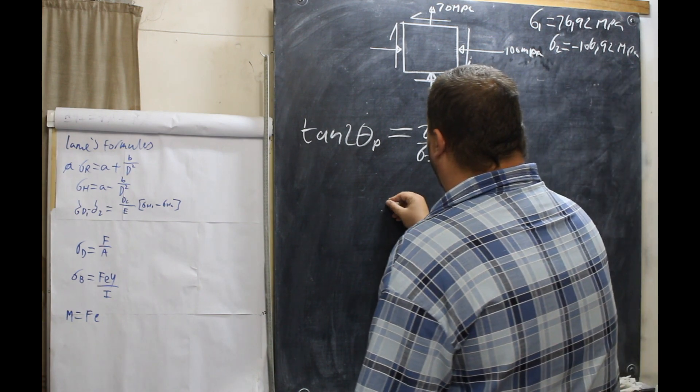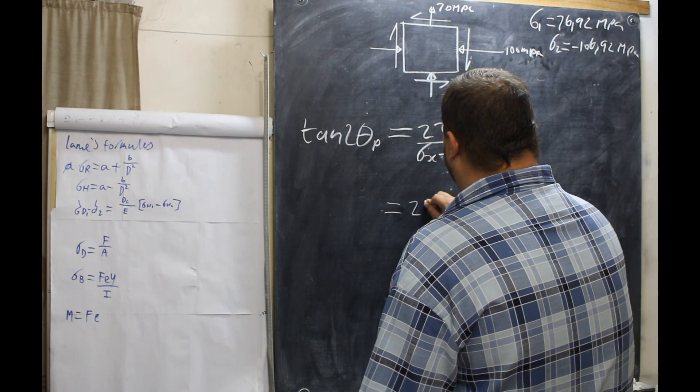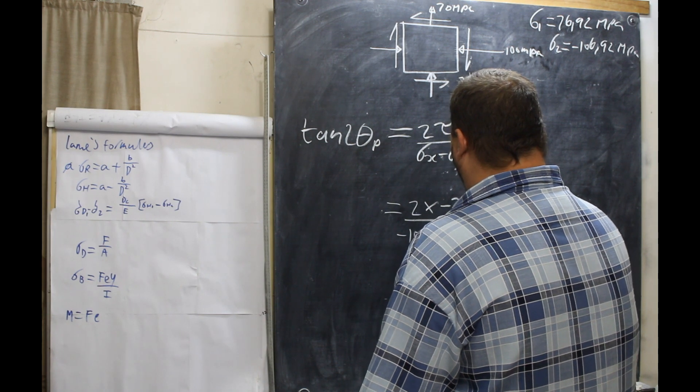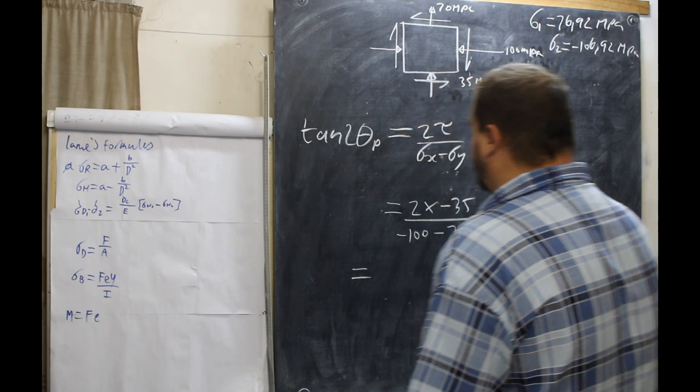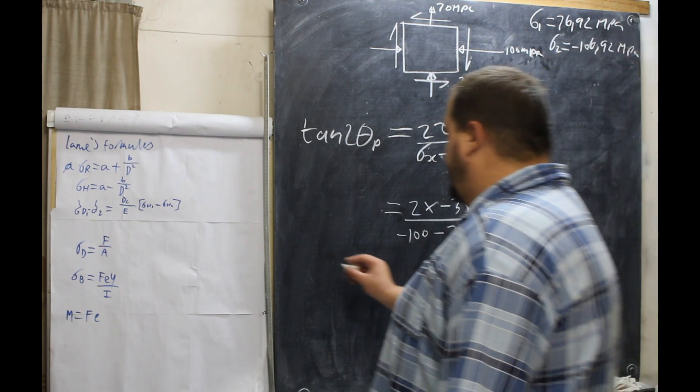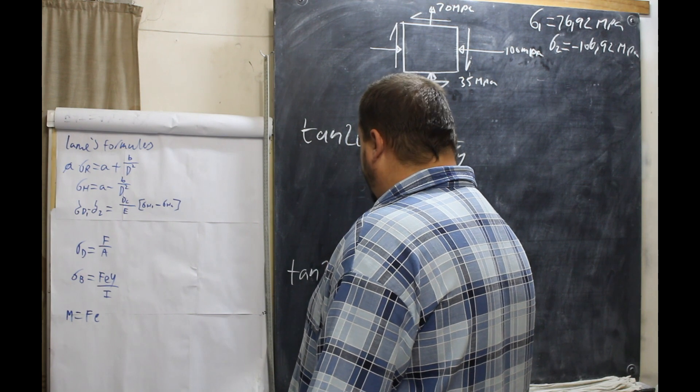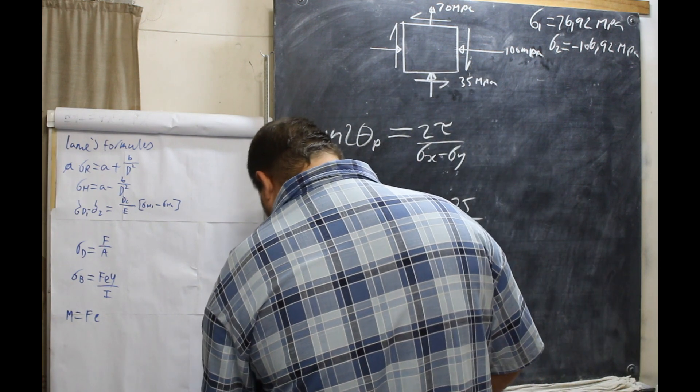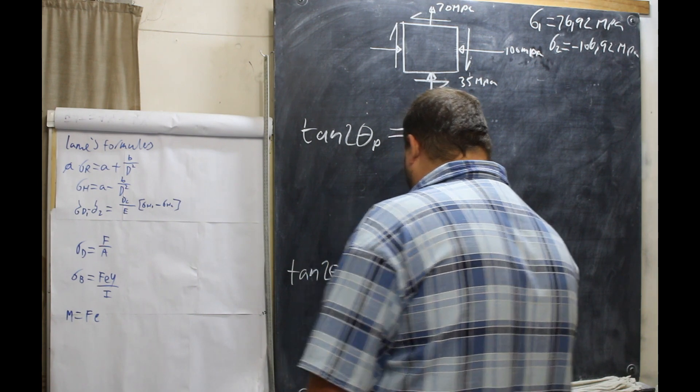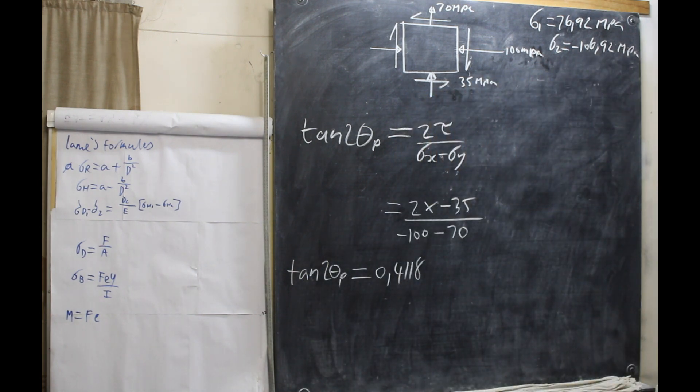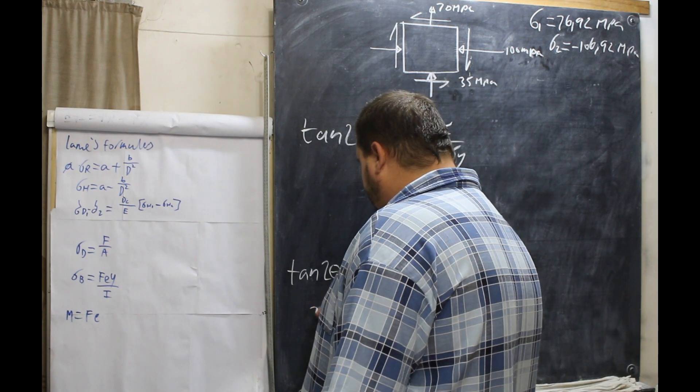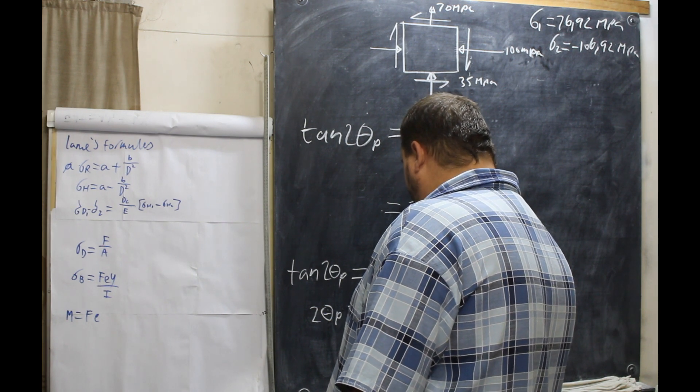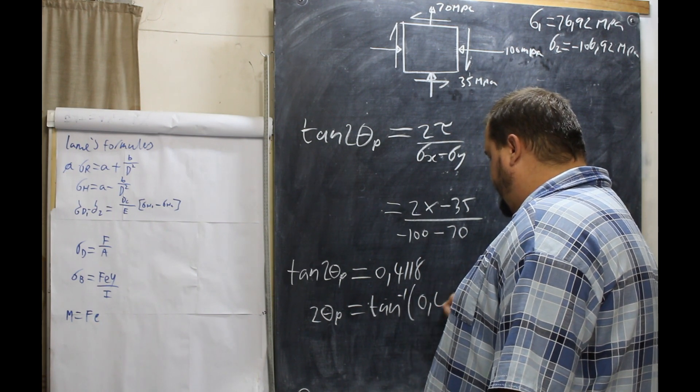So what we have here is 2 times minus 35 all over minus 100 minus 70. And we are left with tan 2θ sub p, and that will equal 0.4118. Now we bring tan over. So 2θ sub p, now we bring the tan to the minus 1 times 0.4118.